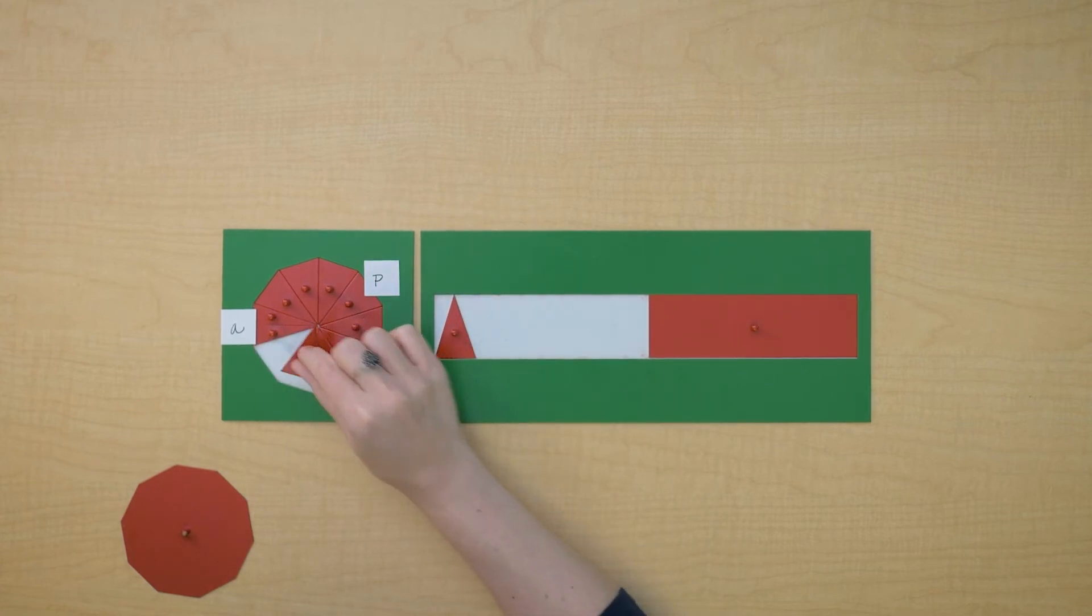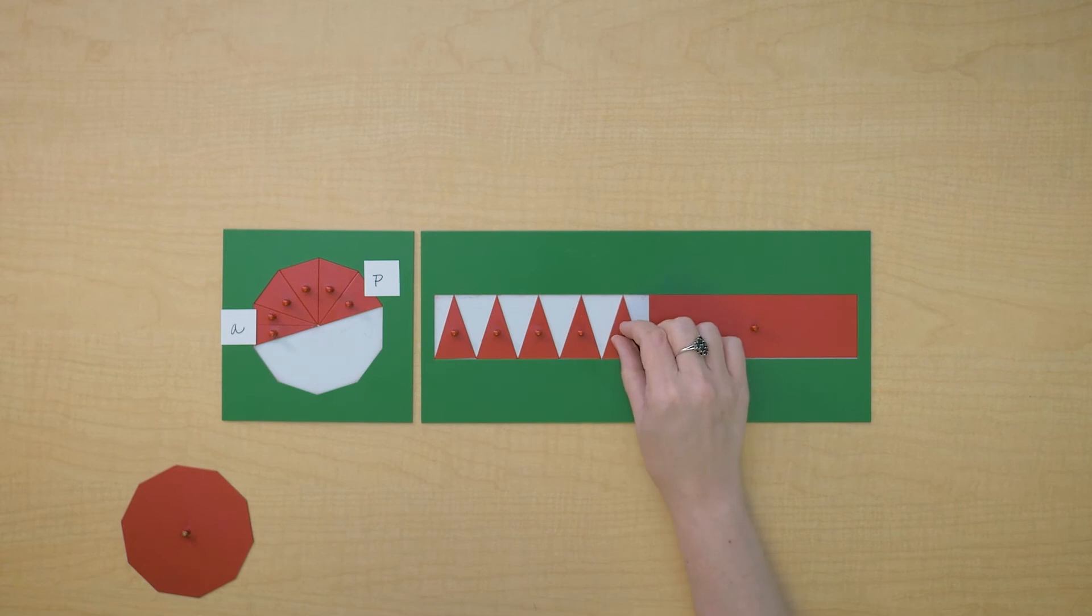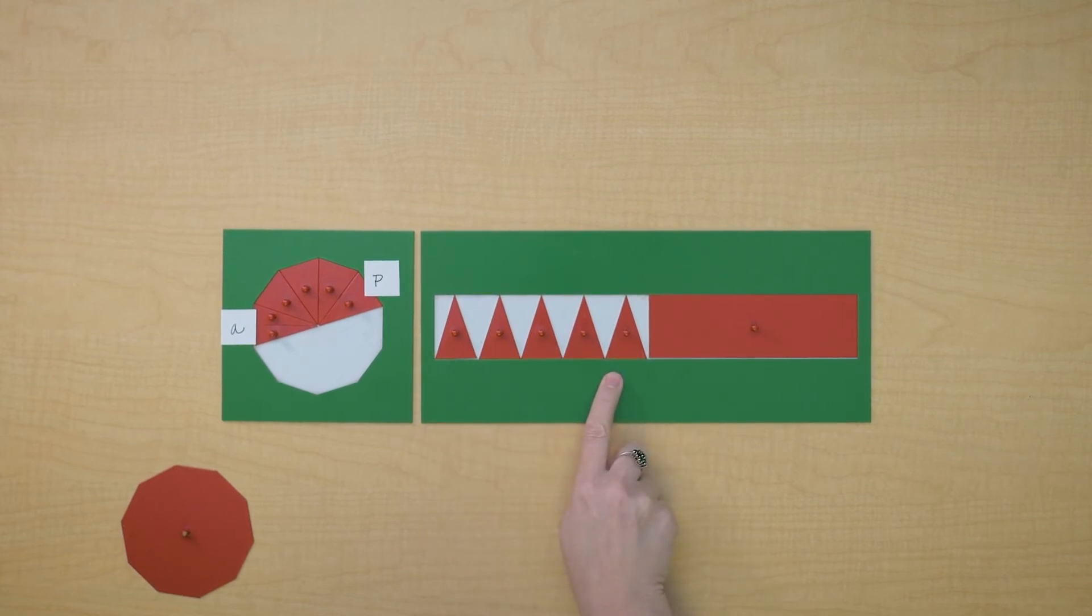So as I'm building the base of this rectangle, look at what the base is. It's half the perimeter.